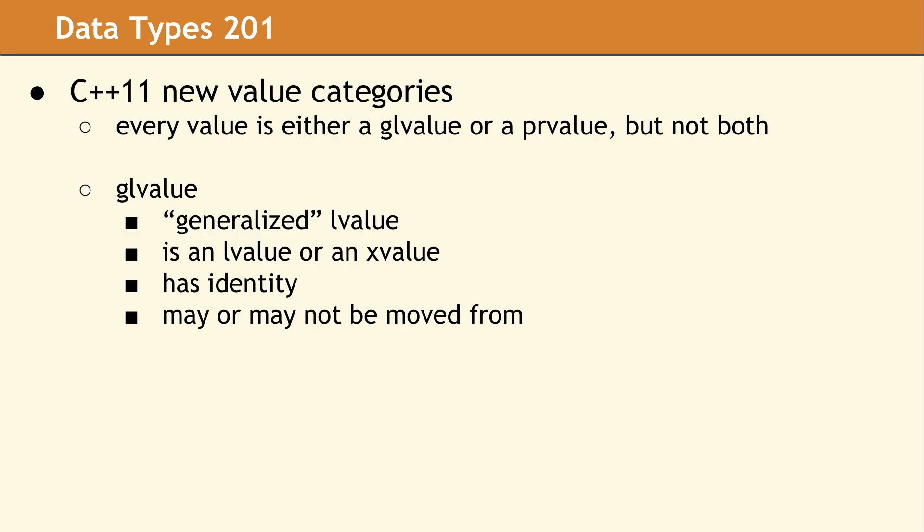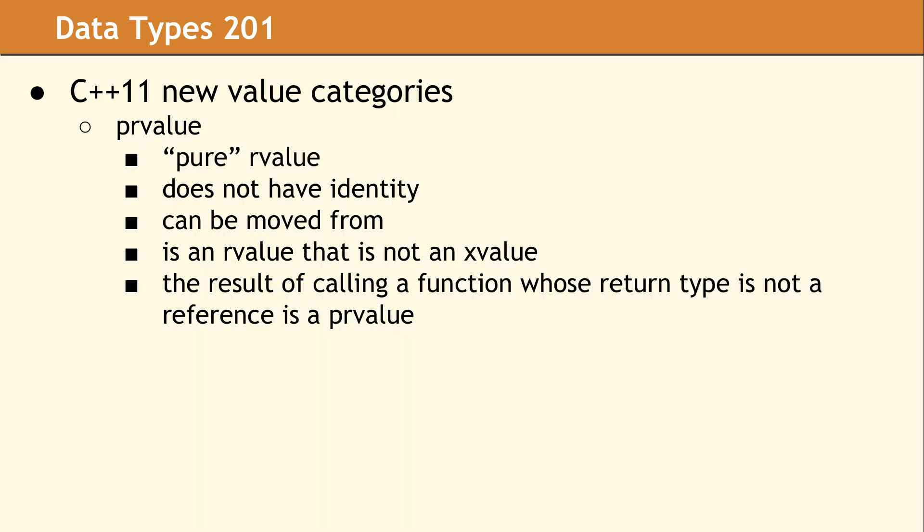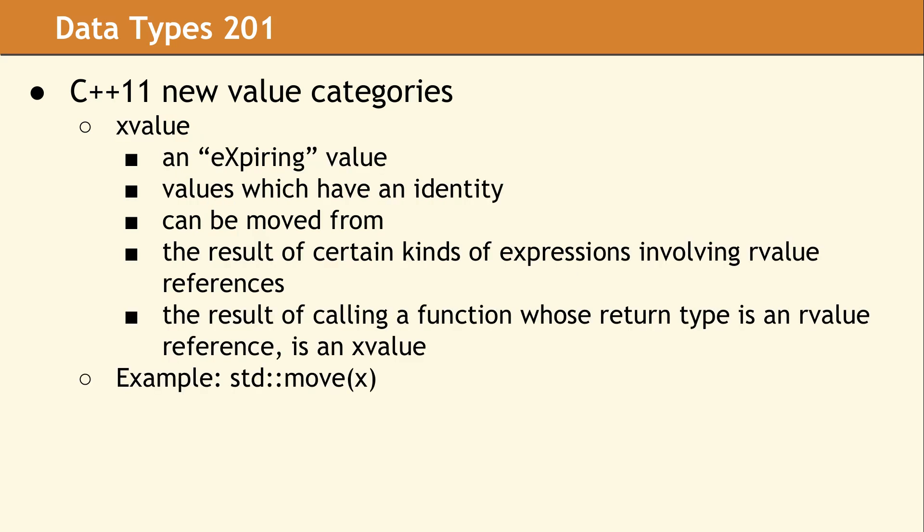In C++11, new value categories were added. But keep in mind, every expression is either an L value or an R value. These new categories are a refinement to make the standard more complete. So for example, there is a value category called a GL value. This is the generalization of the L value concept. It's something that has identity but may or may not be moved from. There is also a PR value. This is what the standard calls a pure R value, which is what you would typically find for a temporary. And there is also the x value, which is an expiring value. These values have an identity and can be moved from. This is what you get when you have certain kinds of expressions involving R value references, usually the result of calling a function whose return type is an R value. That's the most common case that you will see.